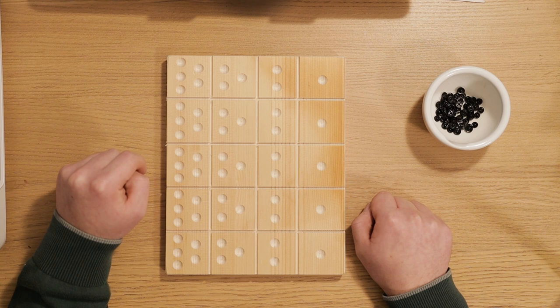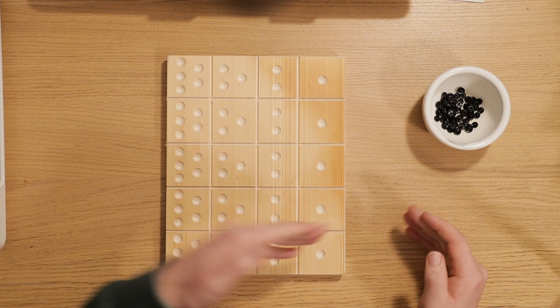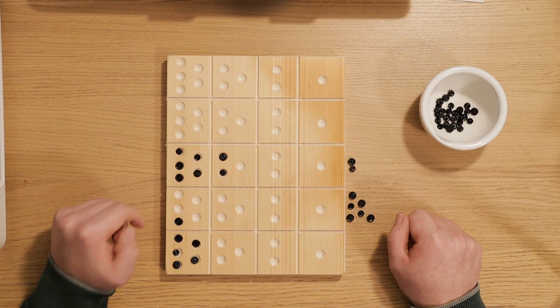Our example for this is 715 minus 260. The first step is identical to addition. We place the larger number on the board and the smaller one to the right. So here we have it.